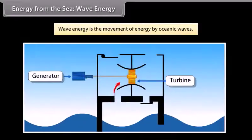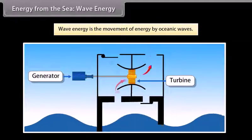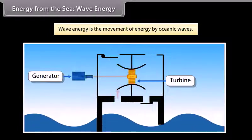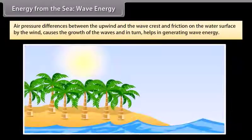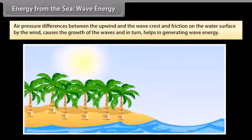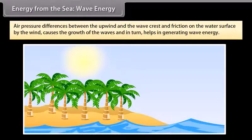Energy from the sea: Wave energy. Wave energy is the generation of energy by oceanic waves. We can capture this energy to do useful work, for example, electricity generation, water desalination, or the pumping of water into reservoirs. Waves are generated by wind passing over the surface of the ocean. As long as the waves move slower than the wind speed above the waves, there is an energy transfer from the wind to the waves. Both air pressure differences between the upwind and the wave crest, as well as friction on the water surface by the wind, makes the water undergo shear stress that causes the growth of the waves and in turn helps in generating wave energy.